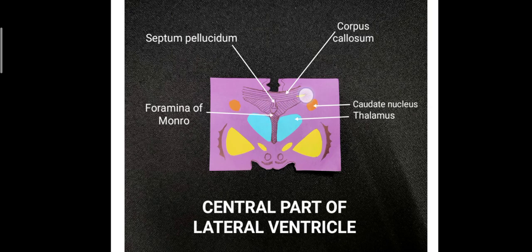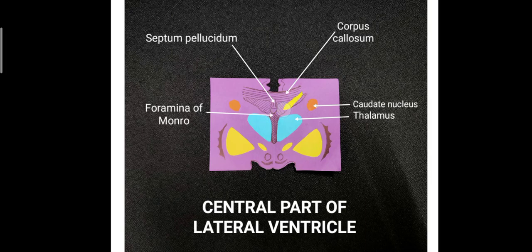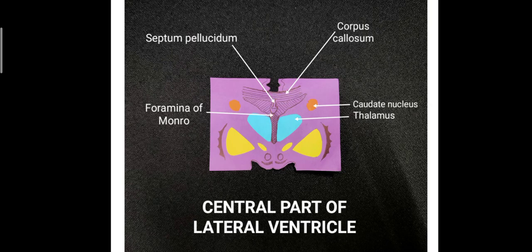Here you can see the lateral ventricle. Above it is the corpus callosum, which defines the roof. Then there is the septum pellucidum — a small structure hanging down — which separates the two lateral ventricles and forms the medial wall. On the floor, medially it is formed by the superior surface of the thalamus, and laterally by the caudate nucleus. These are the relations of the central part of the lateral ventricle.